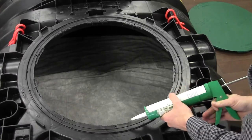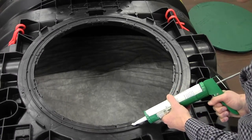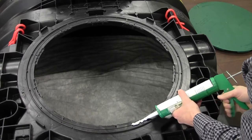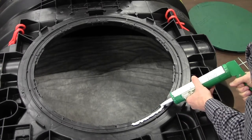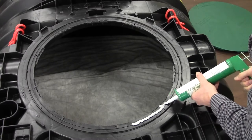Start by applying a generous bead of caulk to the shorter of the standing ribs. Follow that standing rib all the way around. Make sure you hit every pilot hole as you go.